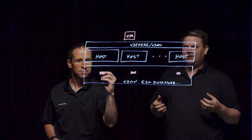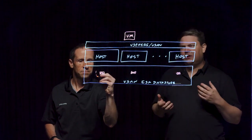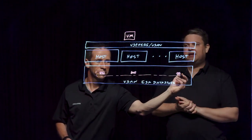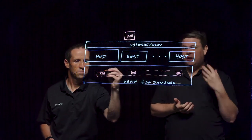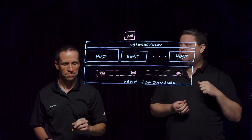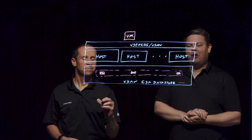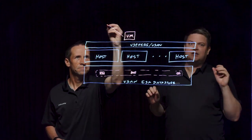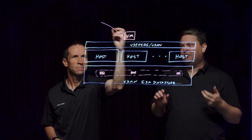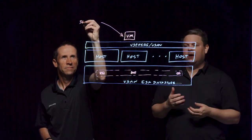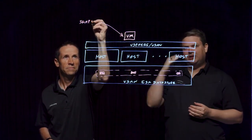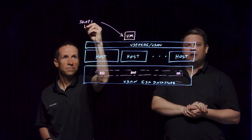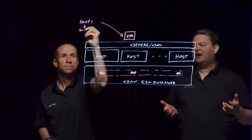If you've used traditional vSphere snapshots, you know that there are some limitations. As you take them, they could potentially stun a virtual machine, and if you have a transactional database pushing a lot of I/O, this could be problematic to have that sudden stun action happen. It may interrupt user activity. Also, the deeper that snapshot chain got, sometimes the performance could definitely degrade significantly.